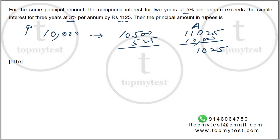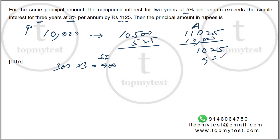Now for simple interest: three percent per annum for three years. Per year interest will be 300 rupees, and 300 into three gives 900 rupees as your simple interest.